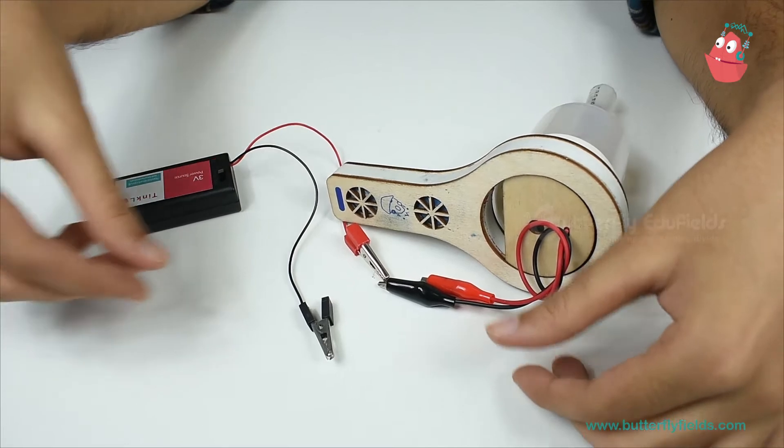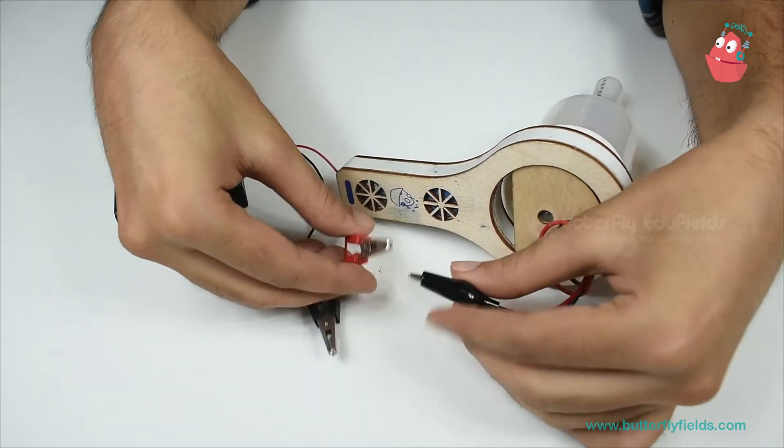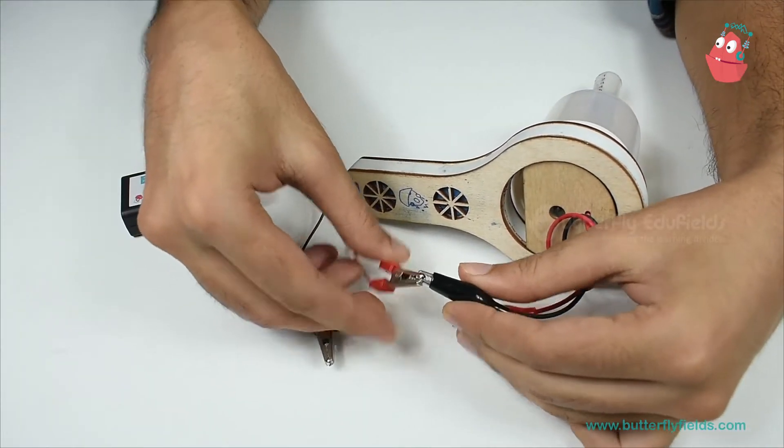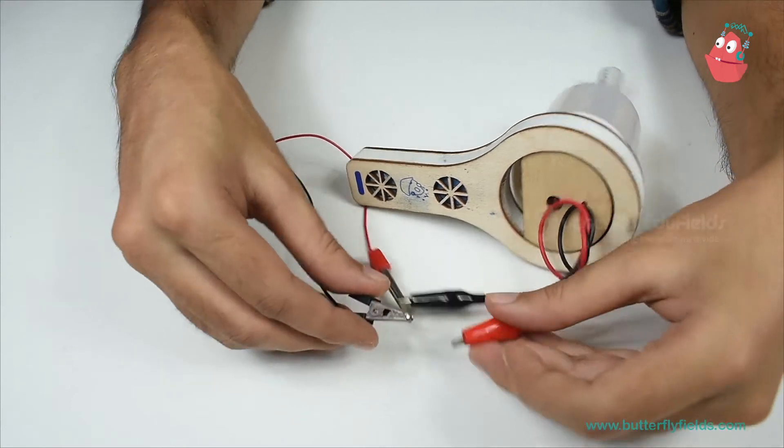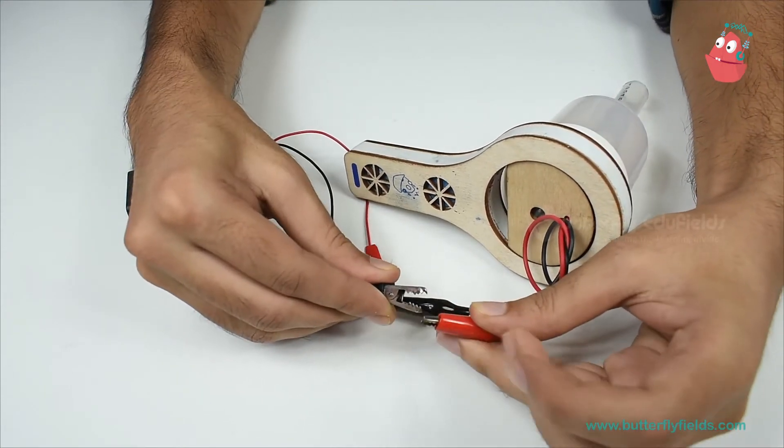Now we are going to attach the battery. Make sure for a vacuum cleaner you attach the red one with the black wire and the black with the red.